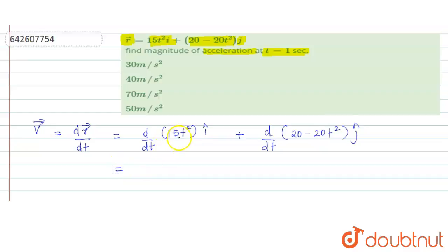So its differentiation is 15 times 2, which is 30t î, and the differentiation of 20 is constant.